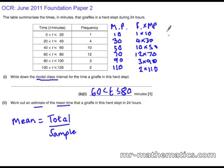So working all of them out: 1 times 10 is 10, 4 times 30 is 120, 10 times 50 is 500, 12 times 70 is 840, and you get 270 and 220.